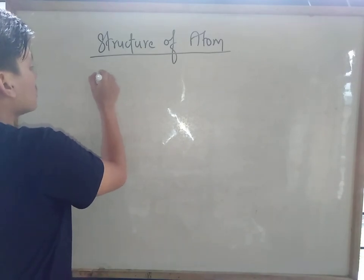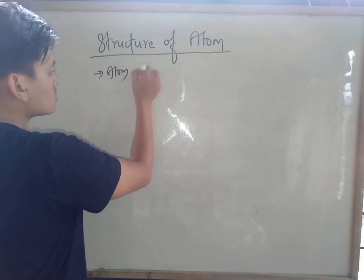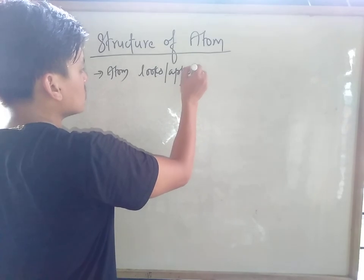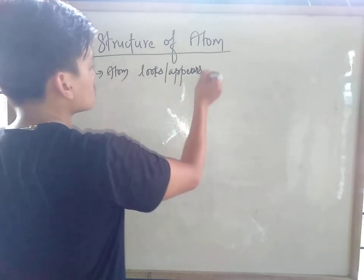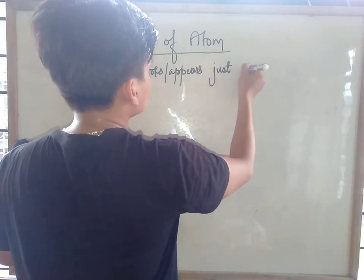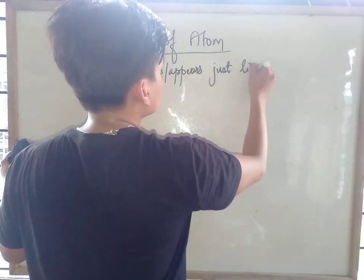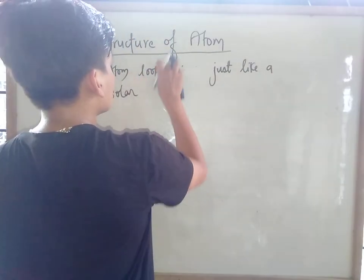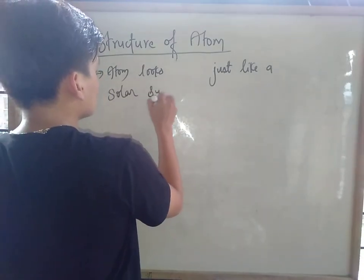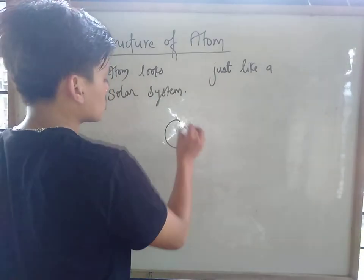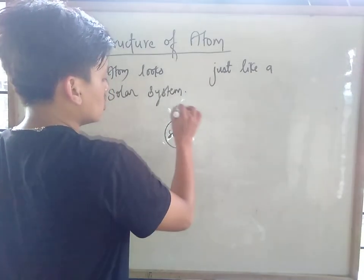An atom is just like a solar system — it looks and appears just like a solar system. For example, in our solar system, what is at the center? The sun is at the center, and the other planets — Mercury, Venus, Earth — revolve around it.